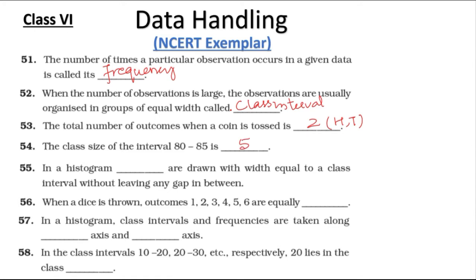Question 55: In a histogram, bars are drawn with width equal to the class interval without leaving any gap in between them. Question 56: In a histogram, class intervals and frequencies are taken along the x-axis and y-axis respectively.